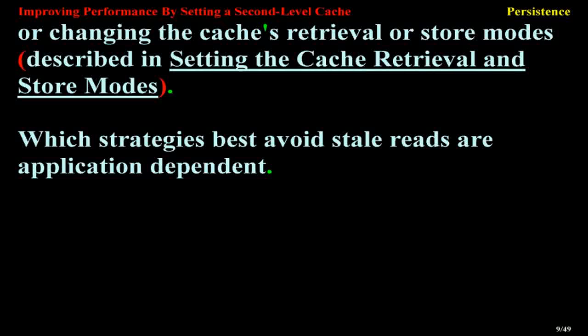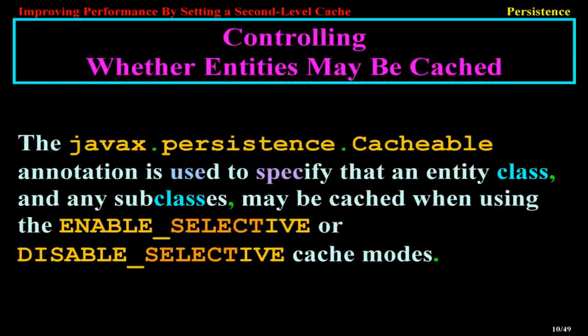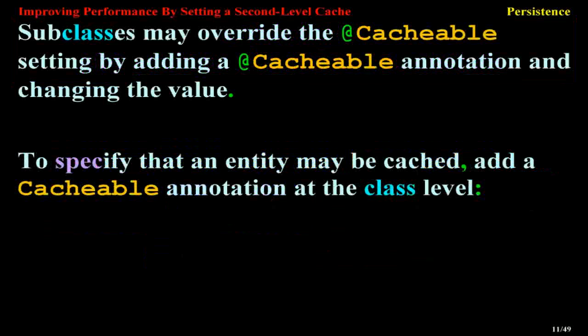Which strategies best avoid stale reads are application-dependent. Controlling Whether Entities May Be Cached. The javax.persistence.Cacheable annotation is used to specify that an entity class, and any subclasses, may be cached when using the ENABLE_SELECTIVE or DISABLE_SELECTIVE cache modes. Subclasses may override the Cacheable setting by adding a Cacheable annotation and changing the value.